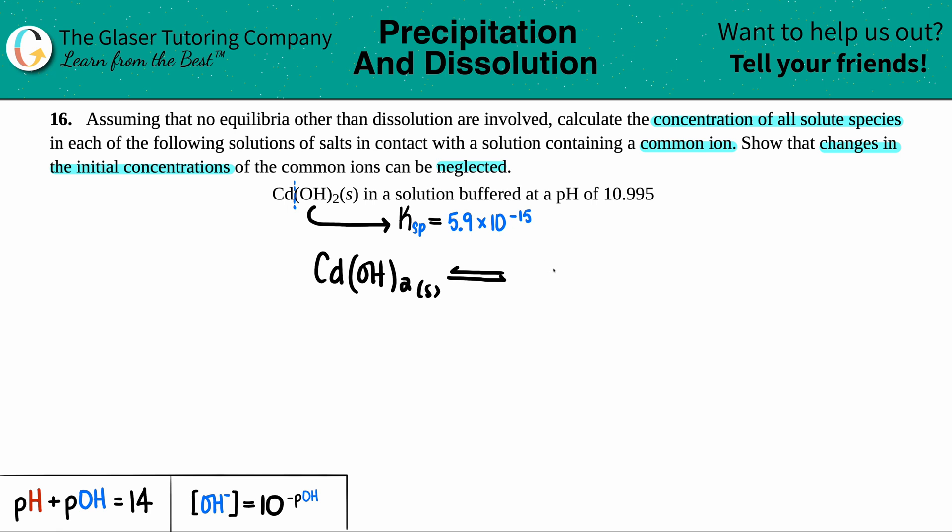So we have Cd and then OH. But I need those charges. You could use the crisscross method - you had one cadmium for every two hydroxides. This one crisscrosses up telling me that the hydroxide is a negative one. This two crisscrosses up telling me that cadmium was a plus two. So plus two, negative one. We had one cadmium, so one Cd, but we had two OHs. So I have to put a two in front of the OH. Anytime that you have charges, those are aqueous.